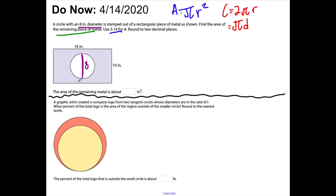This purpley-blue color is outside of the circle. To do that, first I need to find the total area. We're working with a rectangle, presumably 16 by 10, which is 160. We're going to use inches squared.